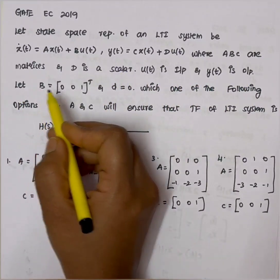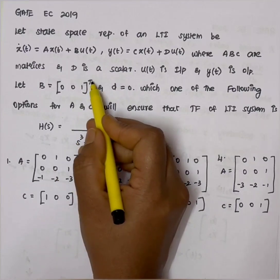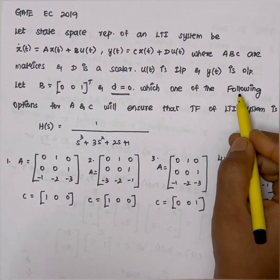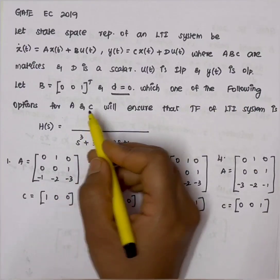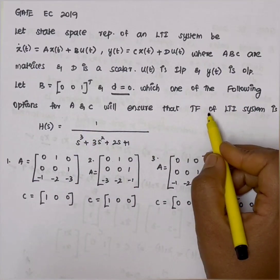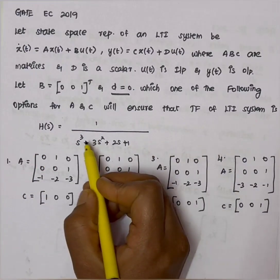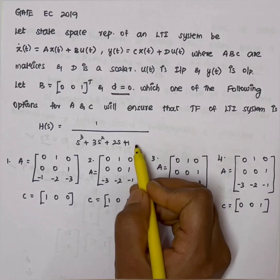Let B equal to the matrix [0 0 1] transpose and D equals 0. Which one of the following options for A and C will ensure that the transfer function of the LTI system is H of s equals 1 divided by s cubed plus 3s squared plus 2s plus 1.